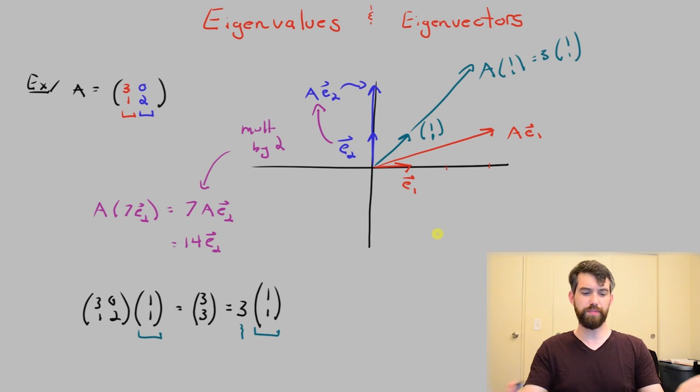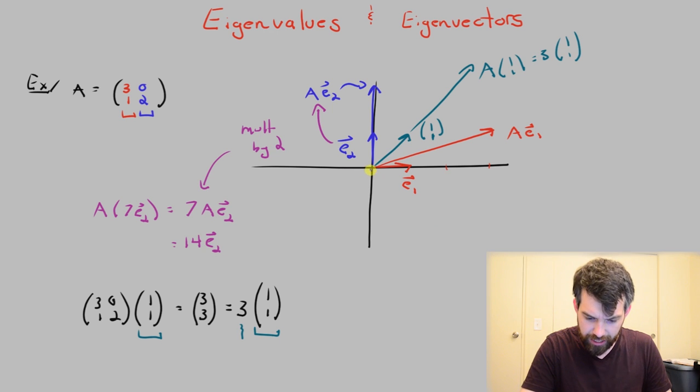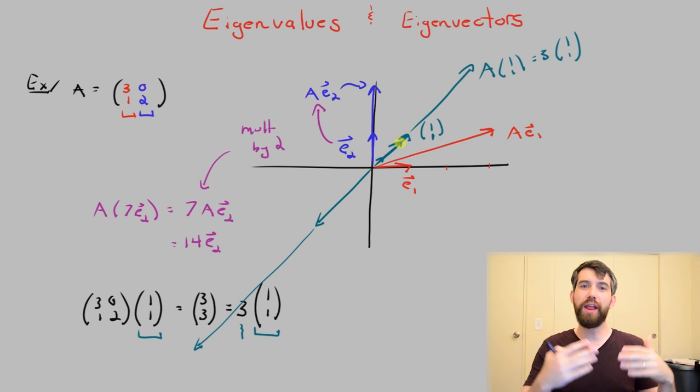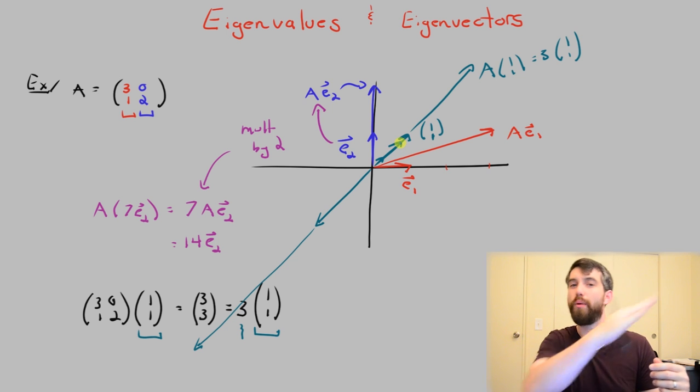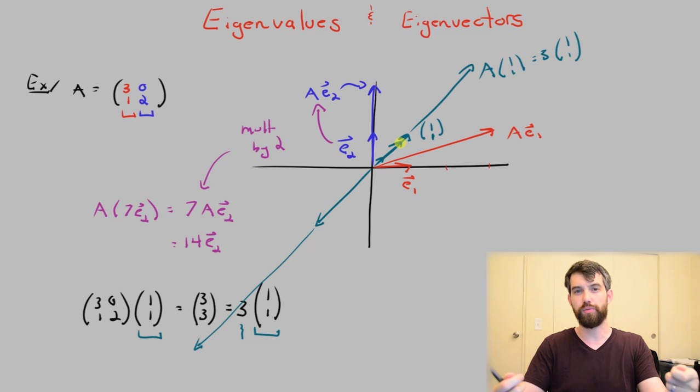And then, of course, because these transformations are linear, the same is going to be true of any other vector. If I, say, take this vector here, then it would transform out to 3 times that vector. If I take just a really little short one, it would stretch out, and so on. It's going to take any vector along that line, any scalar multiple of (1,1), and every time it multiplies it out by 3.